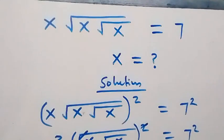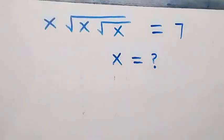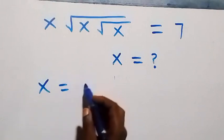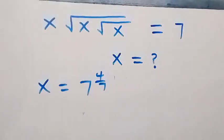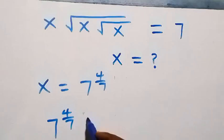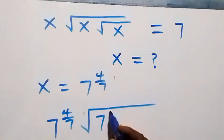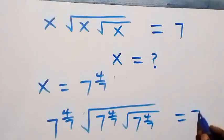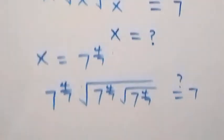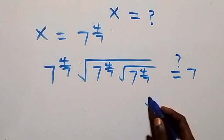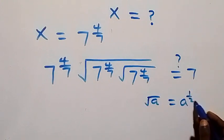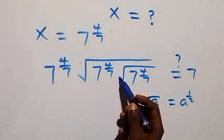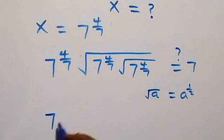Now let's check if this solution will satisfy the given problem. We substitute the value of x, which is seven raised to power four over seven. Then this equation becomes seven raised to power four over seven, multiplied by square root of seven raised to power four over seven, then square root of seven raised to power four over seven — is this equal to seven? We apply the law of indices: root a can be written as a raised to power half.